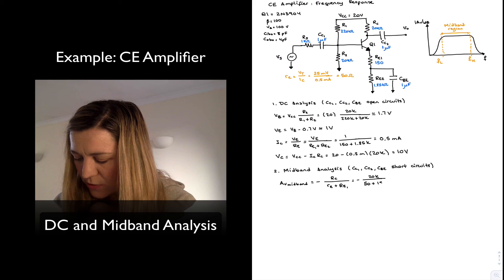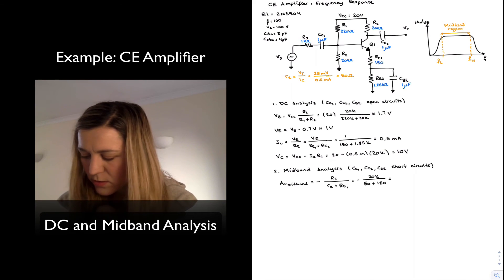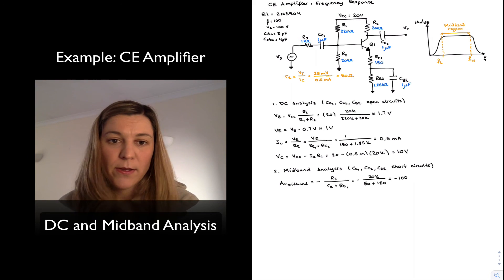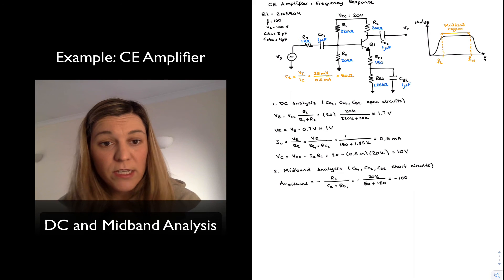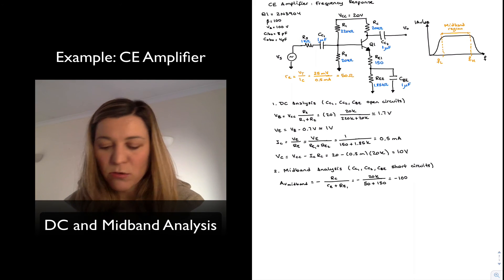So 50 plus 150, or 200 for the denominator, that gives me a voltage gain of negative 100. The magnitude of the voltage gain is the magnitude of that number, which is 100.